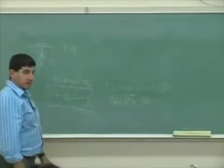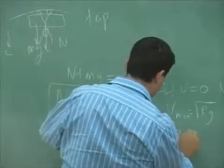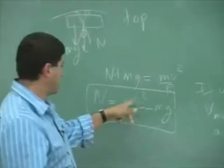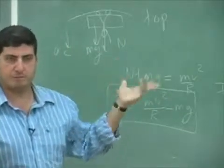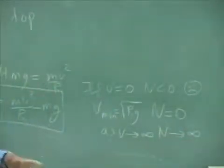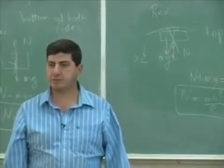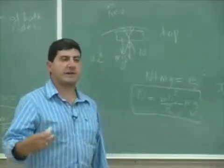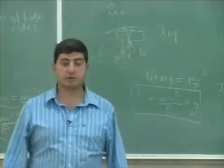How about max V? Is there a maximum V? As V goes to infinity, this term just keeps getting bigger, and N goes to infinity. So there is no absolute maximum. However, you don't want people to feel too heavy at the top, so you design it so that people feel, let's say, three times their weight or whatever. So let's say I were to ask you: how fast should you design the revolution type ride at the top so that people feel three times their weight?